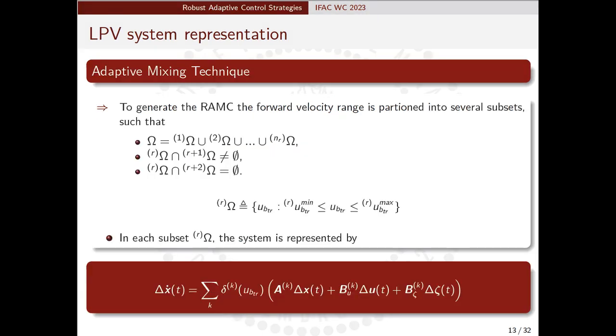Since a single controller might not be able to achieve the control objectives, the set containing the forward velocity range is split into several subsets following three rules: The union of all subsets produces the original set, the intersection between two adjacent sets is non-empty, and the intersection between two non-adjacent subsets is empty.